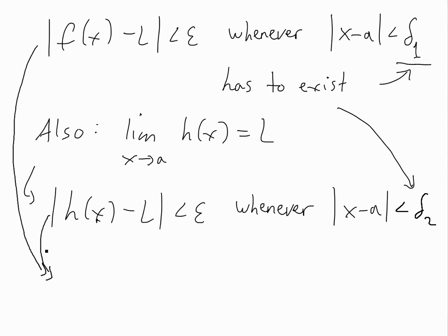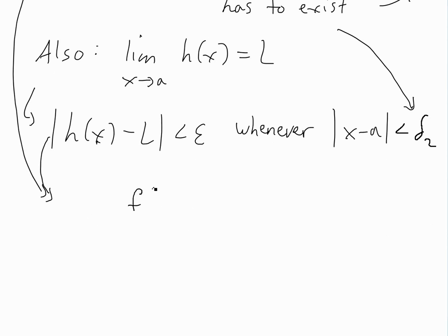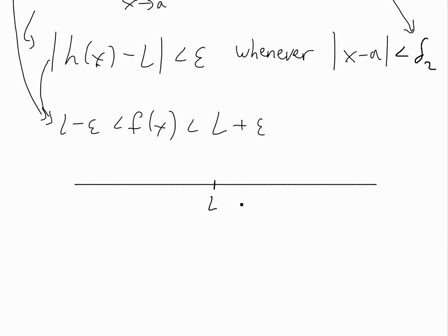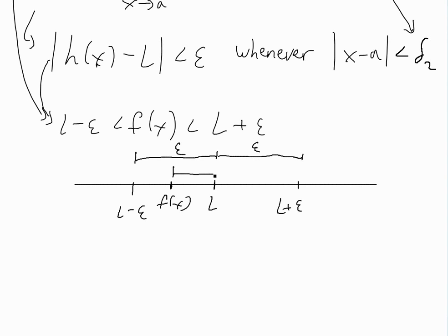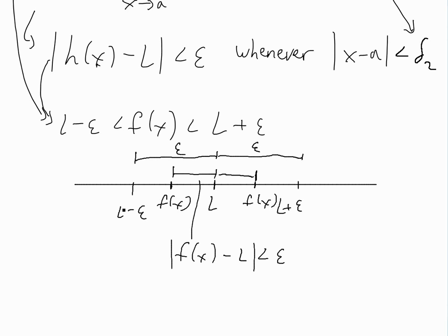You can see a video link below for more on absolute values and their properties. Basically, we can rewrite the first condition as: L minus epsilon is less than f(x), which is less than L plus epsilon. Similarly for h(x): L minus epsilon is less than h(x), which is less than L plus epsilon. These are exactly the same things as the absolute value conditions above. On a number line: if L is in the middle, L plus epsilon is above it, and L minus epsilon is below it, the difference on each side is epsilon. So |f(x) minus L| less than epsilon is equivalent to that interval form.